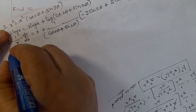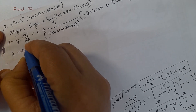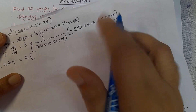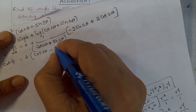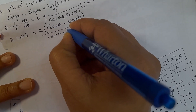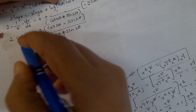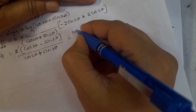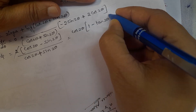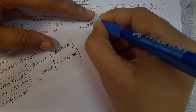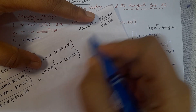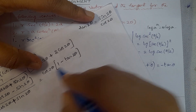Simplifying: taking 2 outside as common factor, cot φ = 2(cos2θ - sin2θ) / (2(cos2θ + sin2θ)). Taking cos2θ as common factor in numerator: cos2θ(1 - tan2θ), and in denominator: cos2θ(1 + tan2θ). The cos2θ terms cancel. So cot φ = (1 - tan2θ)/(1 + tan2θ).